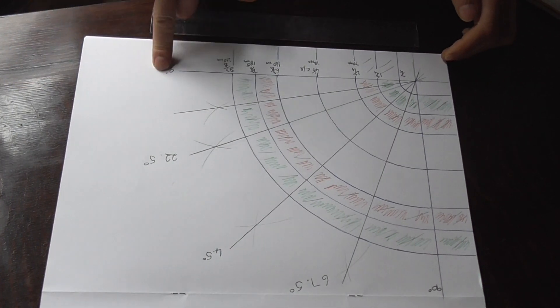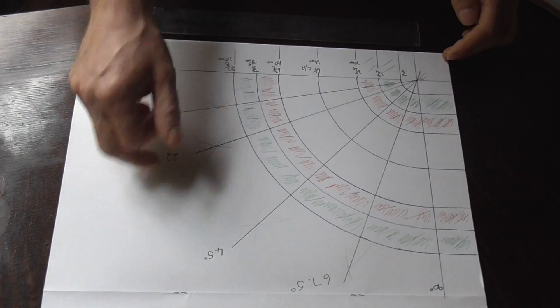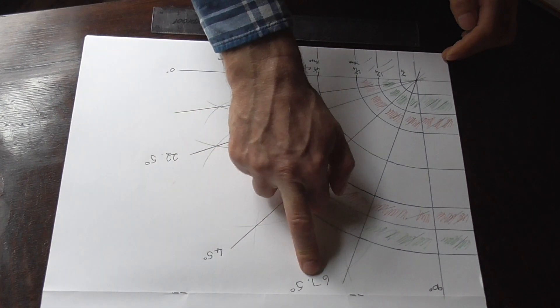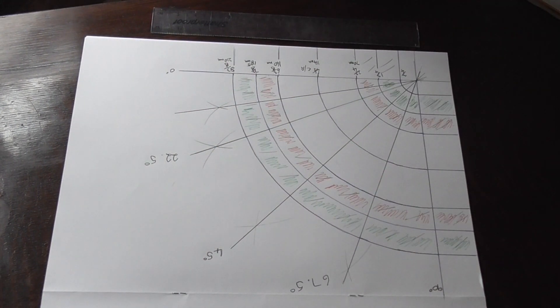And then we've got our degrees here: 0, 22.5, 45, 67.5 to 90. Right, so how does this work?